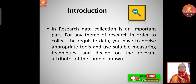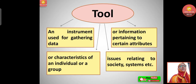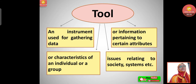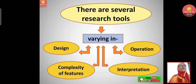In the previous class we understood the importance and meaning of tools of research. Quick recap: a tool is an instrument used for gathering data when doing research. You need some tool to gather data and do further investigation, and there are several research tools varying in design, complexity of features, and operation.